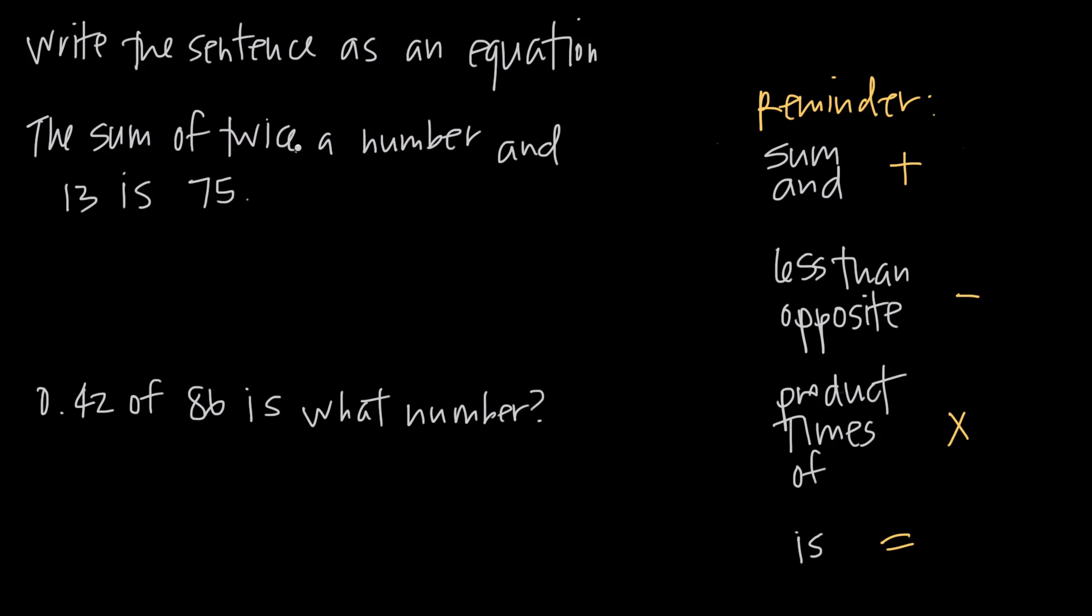So when they give us something like this, the sum of twice a number and 13 is 75. Well, we start from the beginning and we say the sum. So we know that sum means plus, so we go ahead and write down our plus sign. The sum of twice a number and 13.